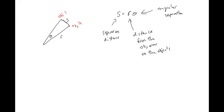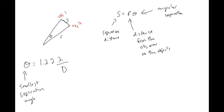Using the equation S = θ × R: if you know the smallest separation angle and how far away whatever you're observing is, you know how far apart objects can be and still tell them apart. Or if you know how far apart two objects are and the smallest separation angle, you can determine the distance from you to those objects.